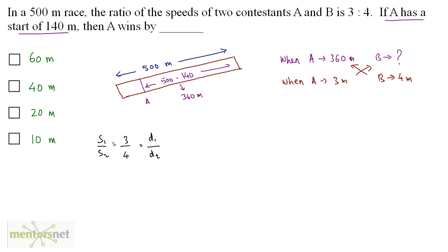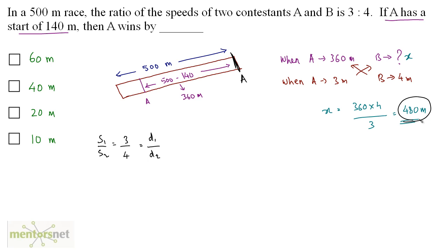Cross multiplying, let the distance traveled by B be x. x equals 360 times 4 divided by 3, which equals 480 meters. So when A is at the winning point, B has traveled 480 meters. How much is A ahead of B? That is 500 minus 480, which equals 20 meters. So A wins by 20 meters — option C is the correct answer.